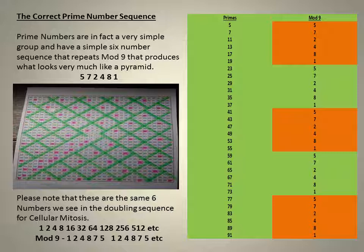Their mod nine counterpart, 1, 2, 4, 8, 7, 5, recurrent.